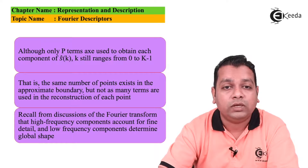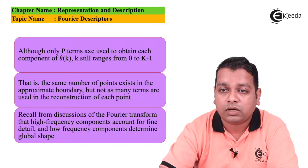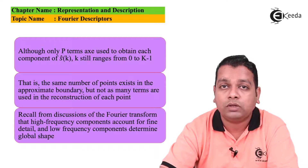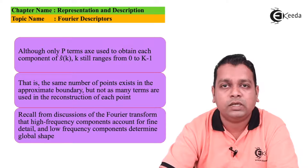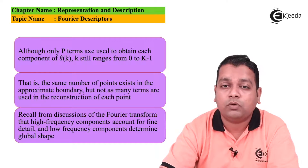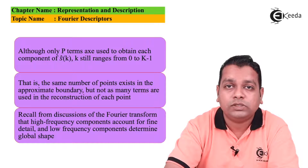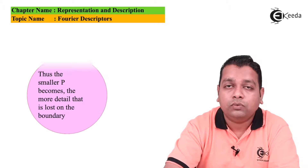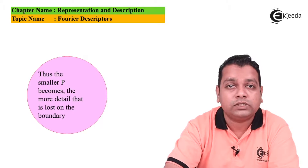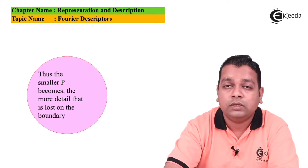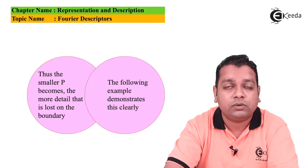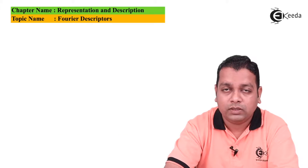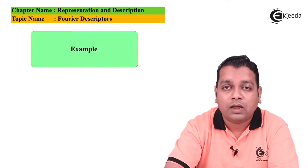We recall from the discussion of the Fourier transform that high frequency components account for the finer details in the image or signal, and the low frequency components determine the global shape. Because of this, the smaller P becomes, the more detail that is lost on the boundary. The following example demonstrates this case very clearly.